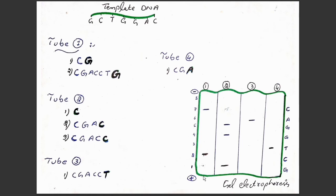The smallest DNA sequence will come nearest to the positive terminal. We apply current, and then run each tube separately on gel electrophoresis. In tube 2, the smallest DNA chain consists of just one nucleotide — C — so when we run tube 2 on gel electrophoresis, the C nucleotide comes nearest to the positive terminal and produces a band there.